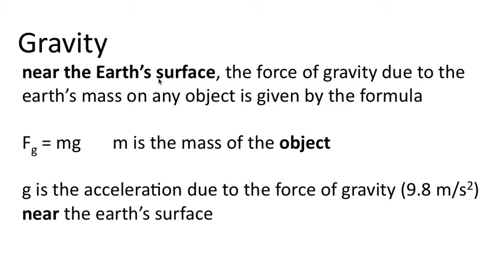G is the acceleration due to the force of gravity, which is 9.8 meters per second squared. This is near the Earth's surface, of course, so this formula is only valid for objects near the Earth's surface.